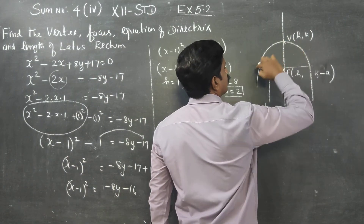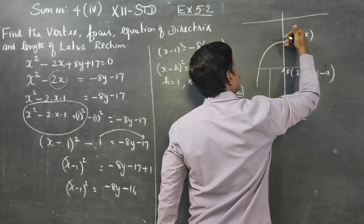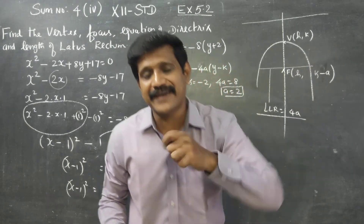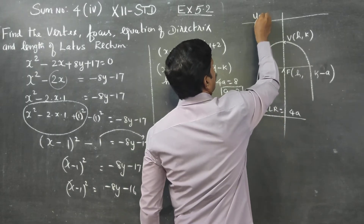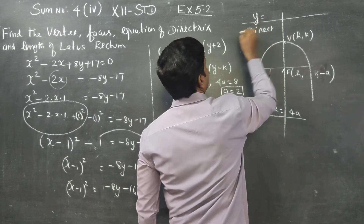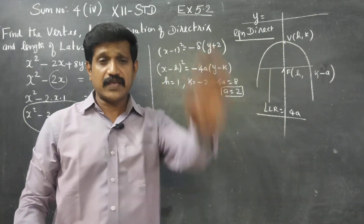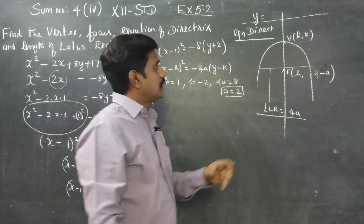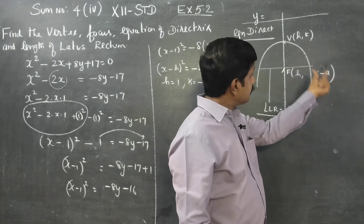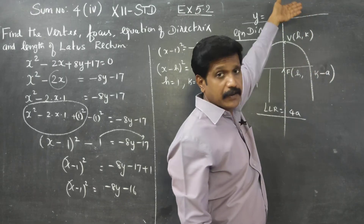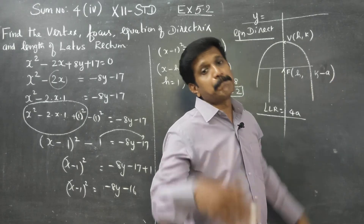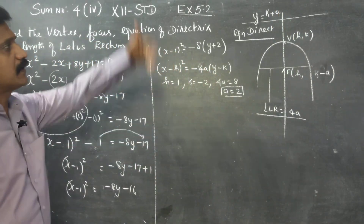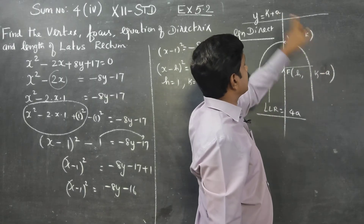The directrix is a line parallel to the latus rectum and equidistant from the vertex. Since the axis is parallel to the y-axis, the directrix equation is of the form y equals some value. For a downward-opening parabola, the directrix is y equals k plus a.